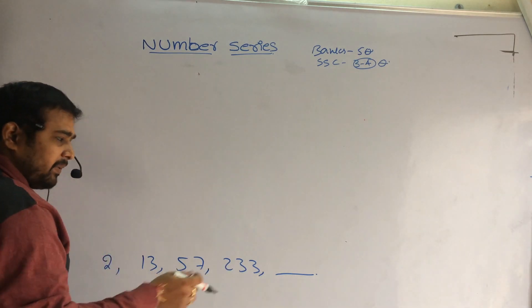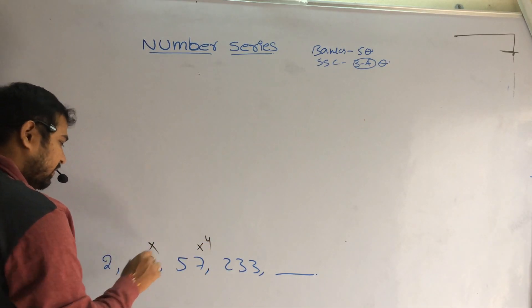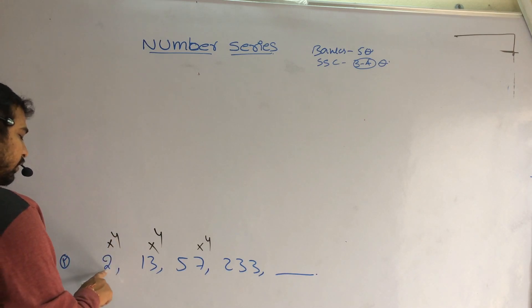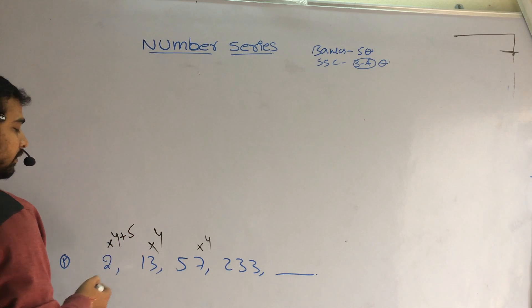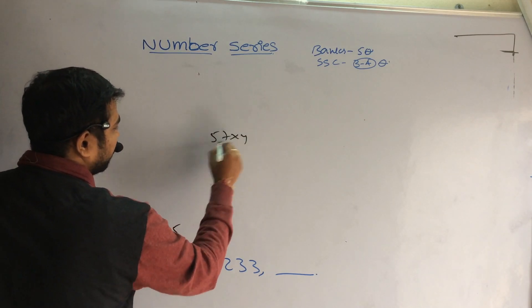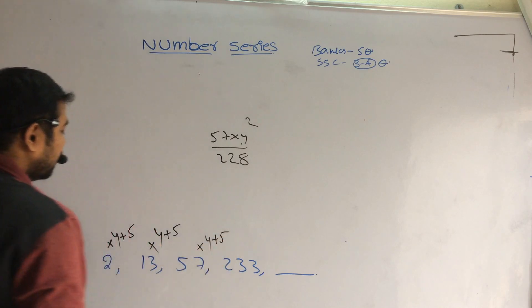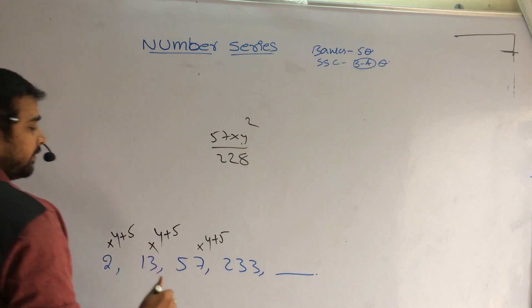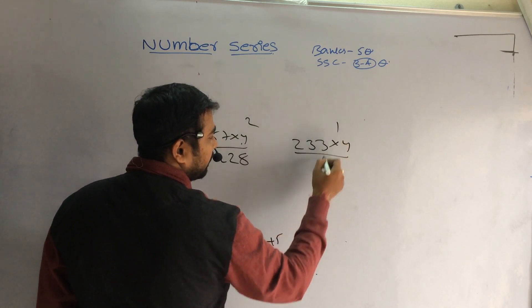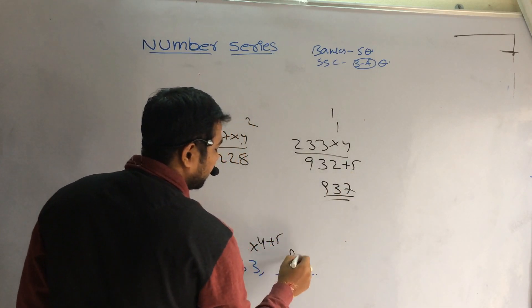So here, the difference is abnormal — multiplication. Approximately it is 60 and 240, approximately multiplied with 4. 2 4's are 8 plus 5 is 13. 13 4's are 52 plus 5. 57 into 4: 7 4's are 28, 5 4's are 20 plus 2 is 22. So 228 and 233, it is plus 5. So here, multiply with 4 and plus 5. 233 multiplied by 4: 4 3's are 12 plus 1 is 13, 4 2's are 8 plus 1 is 9, and plus 5. It is 937, which is my answer.